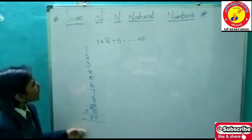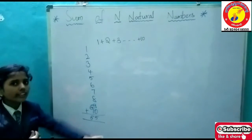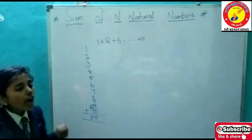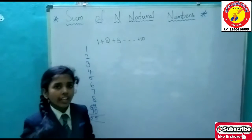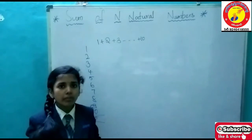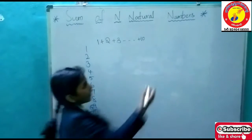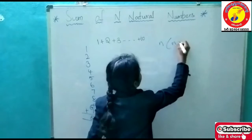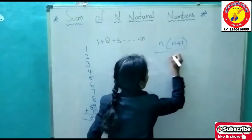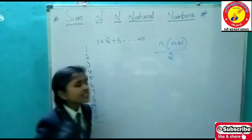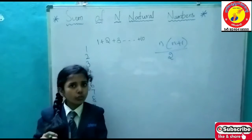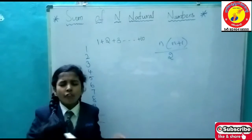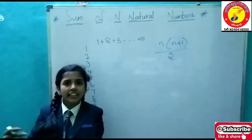So we got the sum. But it is taking much time to do and it is very hard to do, right? So I am here to tell you about a simple formula called n of n plus 1 by 2. This is a formula which is used to find the sum of natural numbers from 1 to any number like 10, 20, 30, etc.